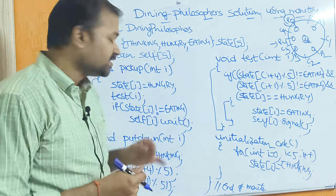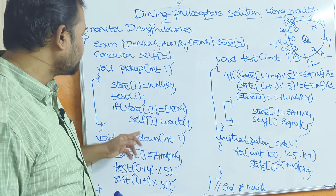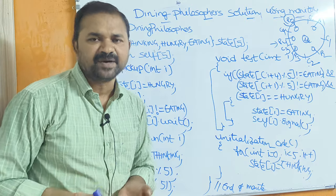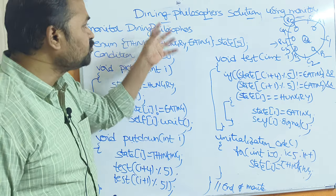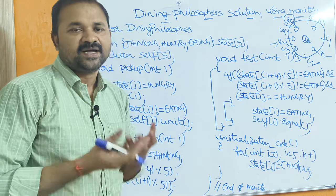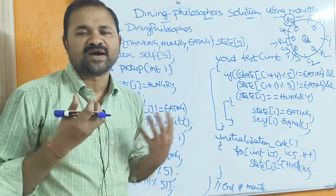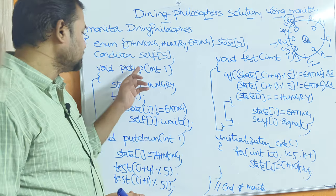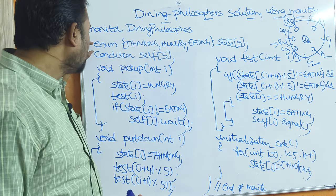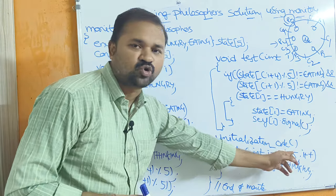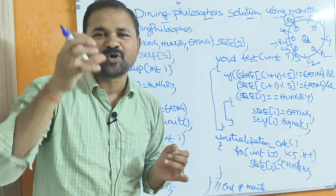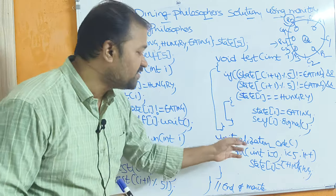These are shared variables. We have three procedures: pickup, putdown, and test. These procedures accept 'i' as the argument, where 'i' specifies the philosopher number 0 through 4. To solve this problem using the monitor, we first call the pickup function to acquire the two corresponding chopsticks. Once acquired, the philosopher can eat. Once eating is over, we call the putdown function. We also have 'initialization_code' for providing default initial values to the shared data.